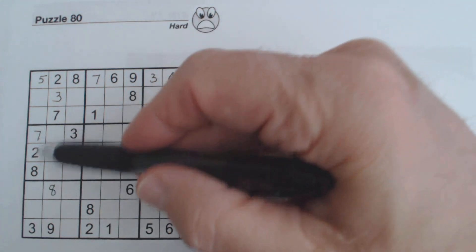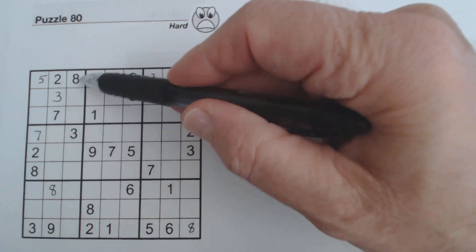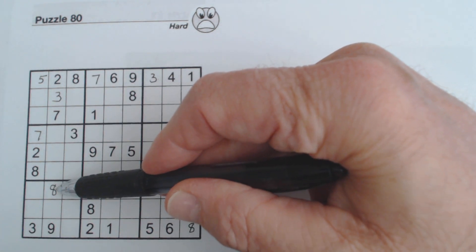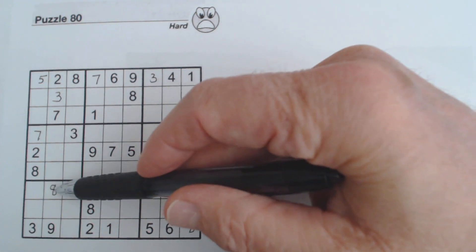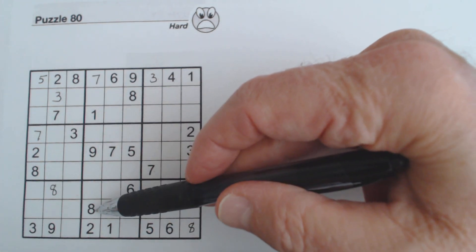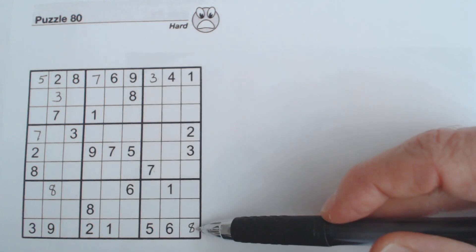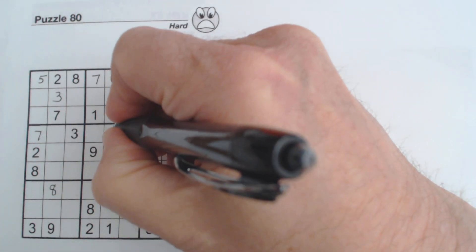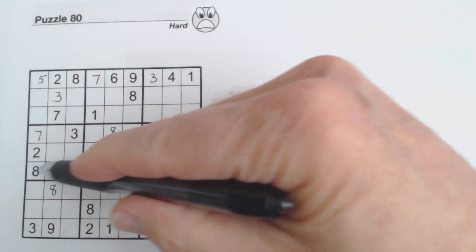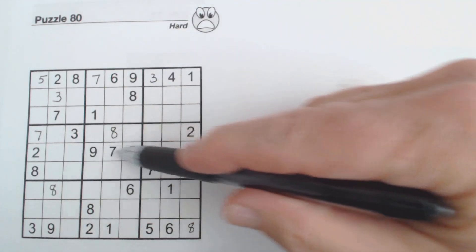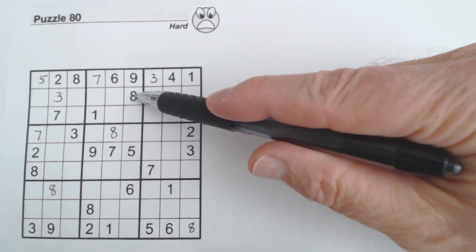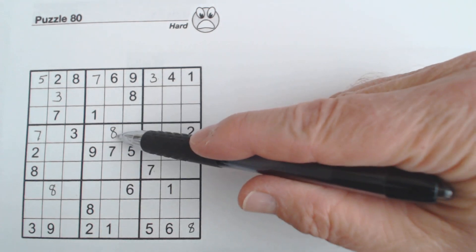These are pretty easy too. We've got 8 here, 8 here, and 8 here, so that makes that an 8. We've got an 8 here and a wall here, so one of these has to be an 8, and we've got an 8 and an 8 here already.